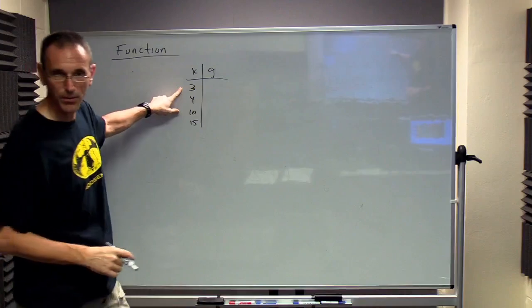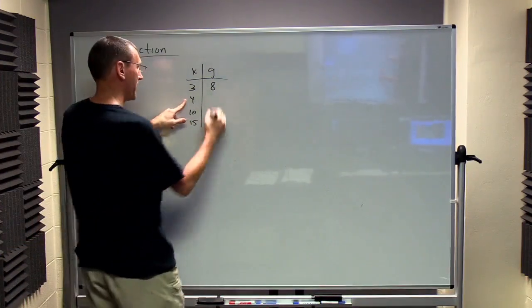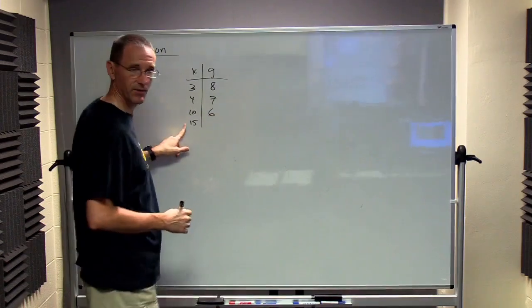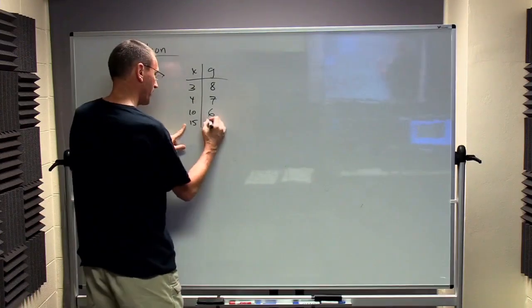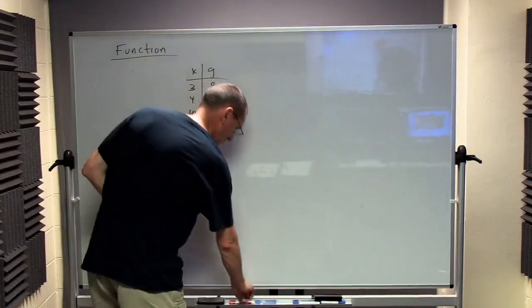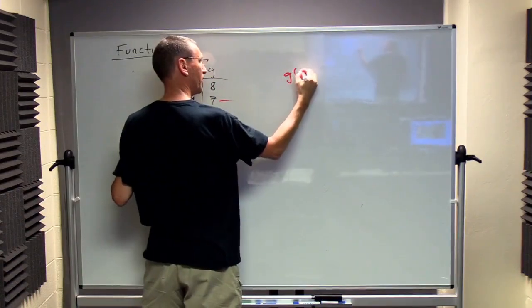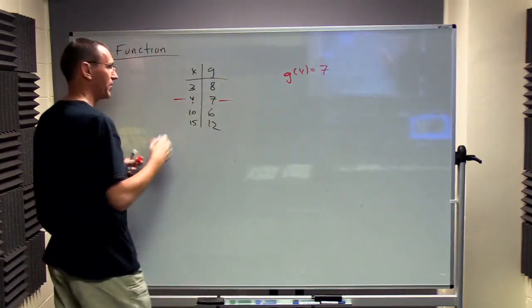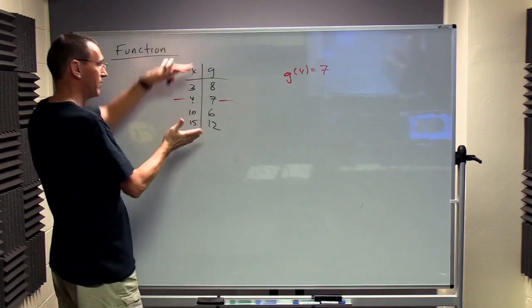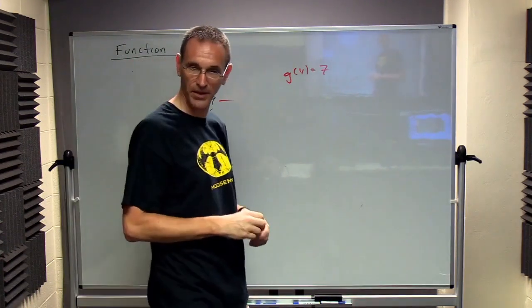If you give me 3, the rule is I return 8. If you give me 4, the rule is I give you 7. If you give me 10, the rule says I give you 6. If you give me 15, the rule says I give you 12. So in this case, I would say that g of 4 equals 7. And you can read it across in rows. Sometimes people put these... we'll flip this the other way and you read it in columns. It's all good.